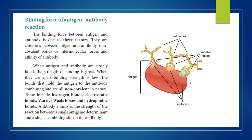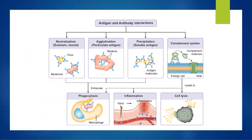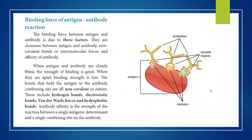Whenever a bacteria or virus enters our body, first a complex is formed by means of binding forces. Then various forms — neutralization, agglutination, precipitation, inflammation, and phagocytic conditions — occur. Finally, neutralization or destruction of antigens takes place, which is called cell lysis. This is the antigen-antibody interaction.